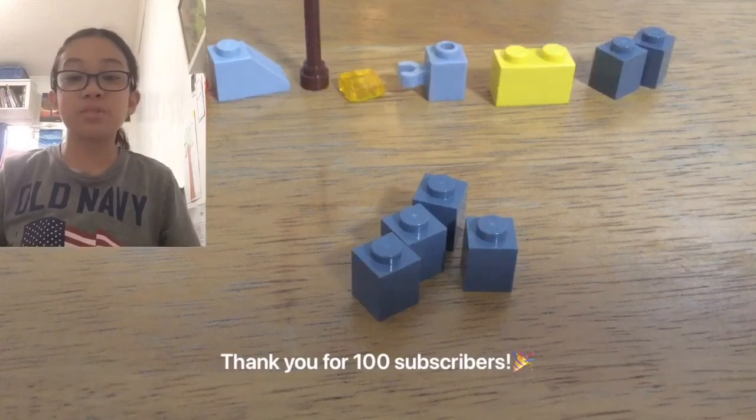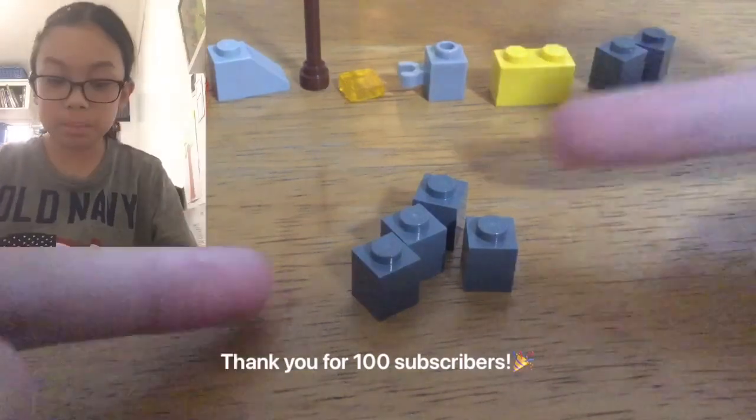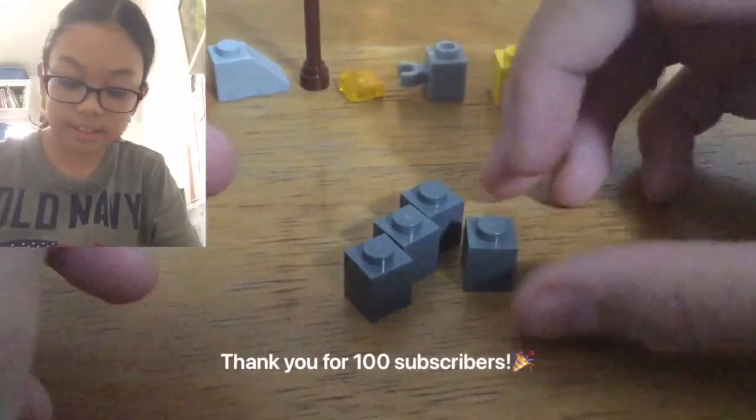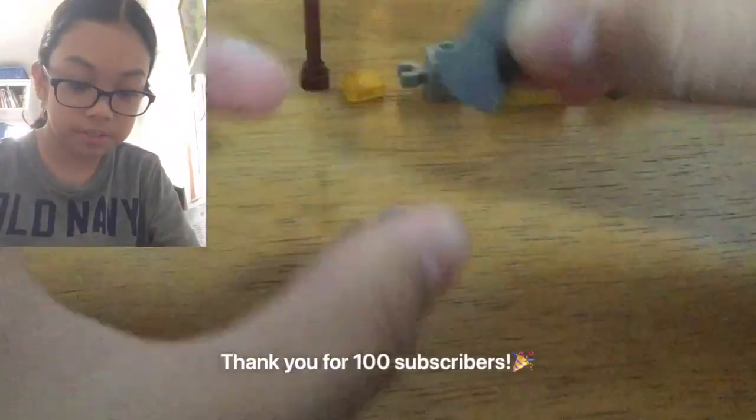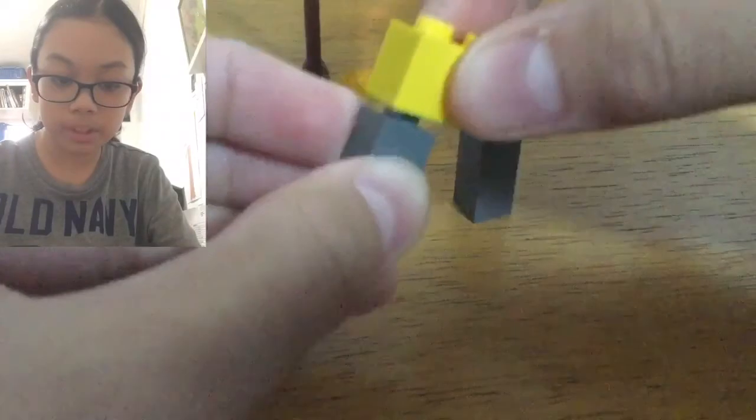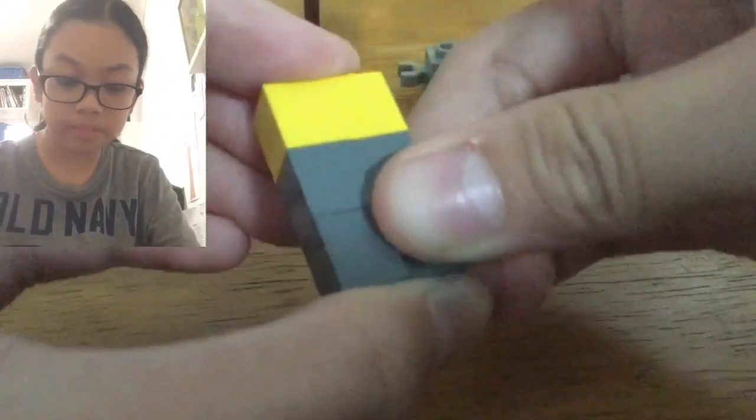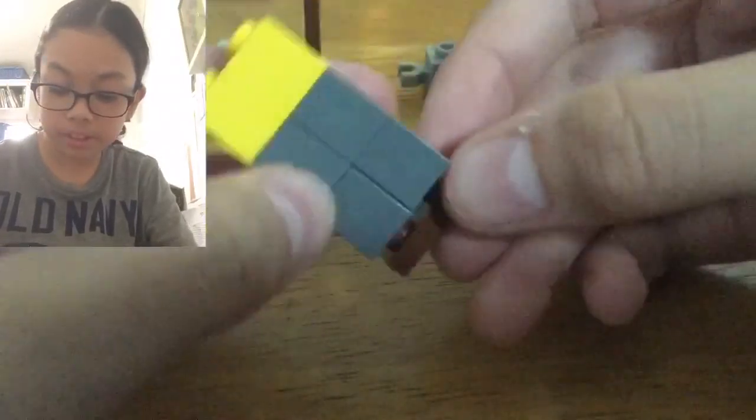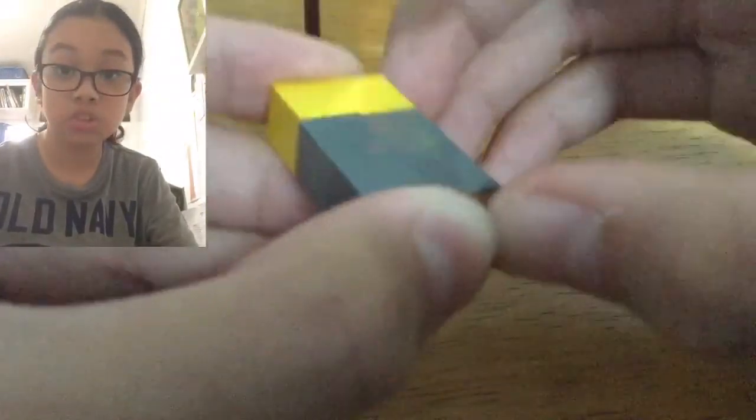So let's get four of our 1x1 bricks and stack them on top of each other. Next, we'll get our 1x2 brick and put it on top. Next, get our 1x2 plate and put it on the bottom for more structure.